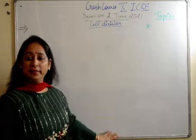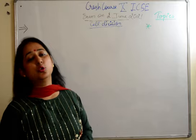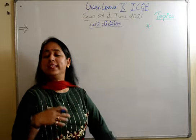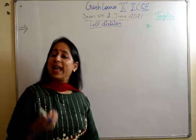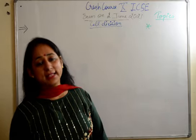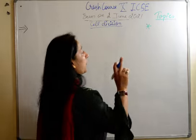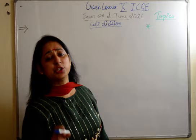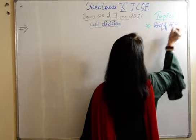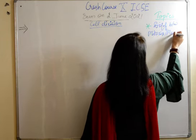So we will start with cell division. First of all, whenever we start a chapter, the first thing we must know is what topics we need to focus on — everything is not required. We are taking a crash course, doing a revision, so stick to the very important topics. The first topic from cell division is the difference between mitosis and meiosis.